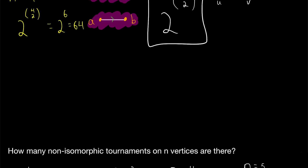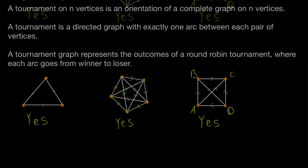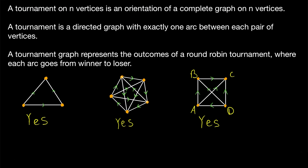So that's a quick introduction to tournaments. A tournament is simply an orientation of a complete graph, or equivalently, a directed graph with exactly one arc between each pair of vertices. Next, we'll talk about transitive tournaments — if you're familiar with the word transitive, you might be able to guess what that means — and the first theorem we'll prove about tournaments will be about transitive tournaments.